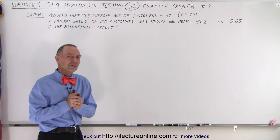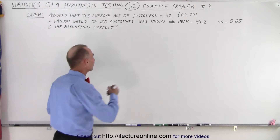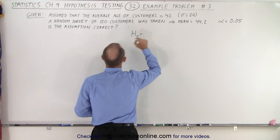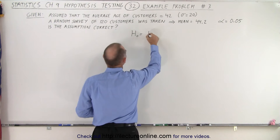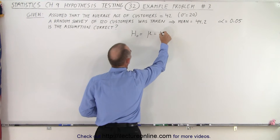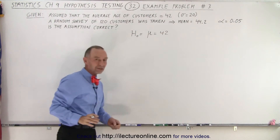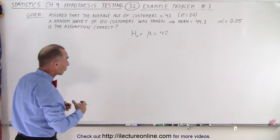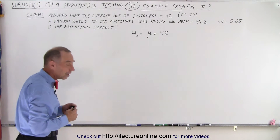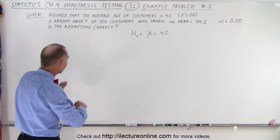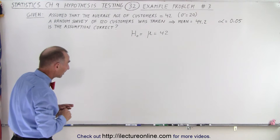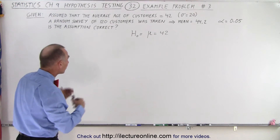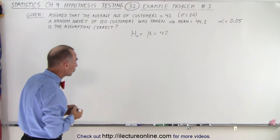The first thing we do is set up a null hypothesis. The null hypothesis is that the mean of the population is equal to 42, just like they claim. We're going to see if we reject that null hypothesis or not — we assume the assumption is correct. The null hypothesis claims that the mean age of the customers is 42.